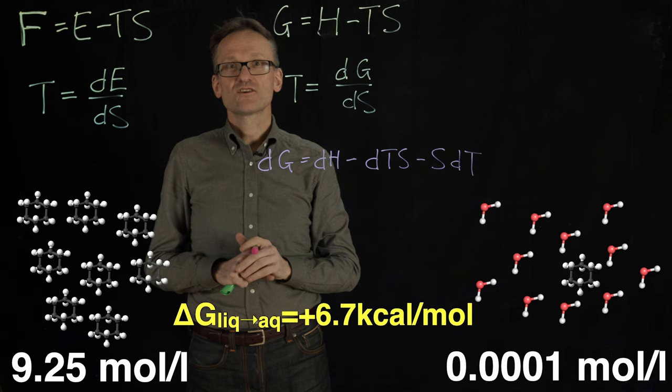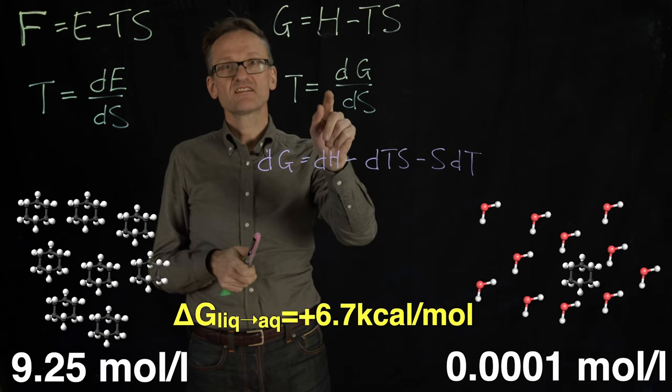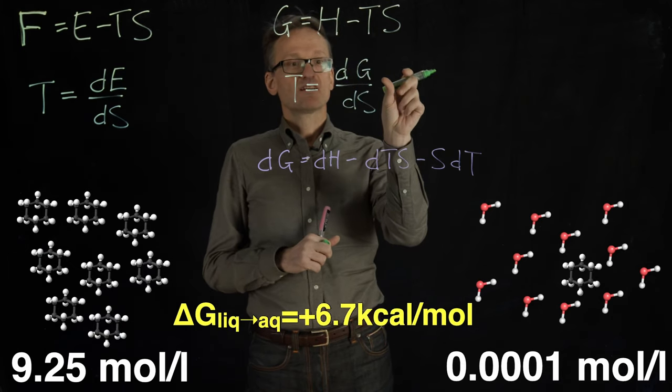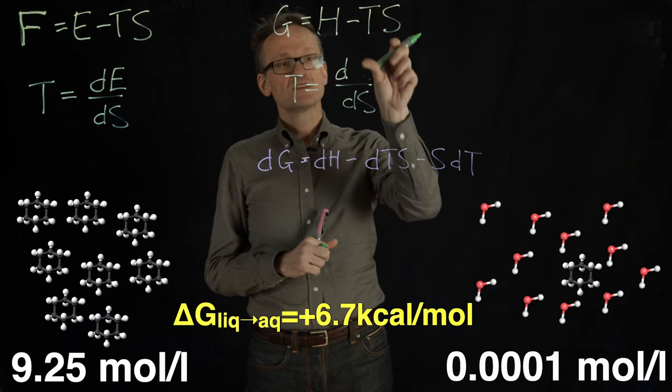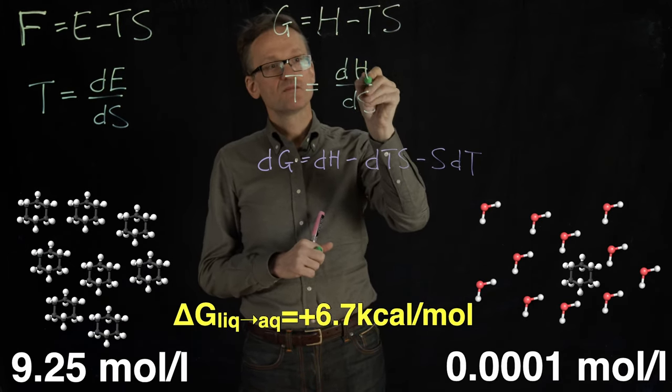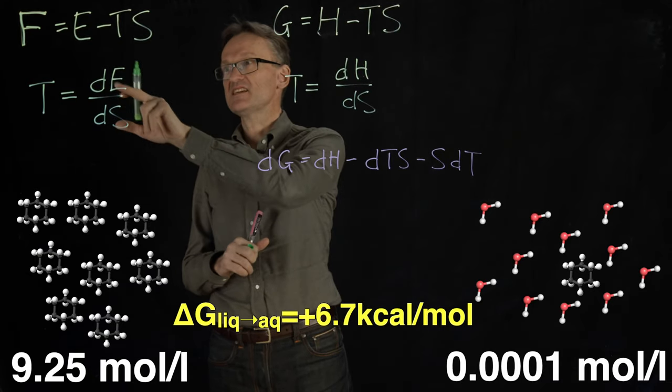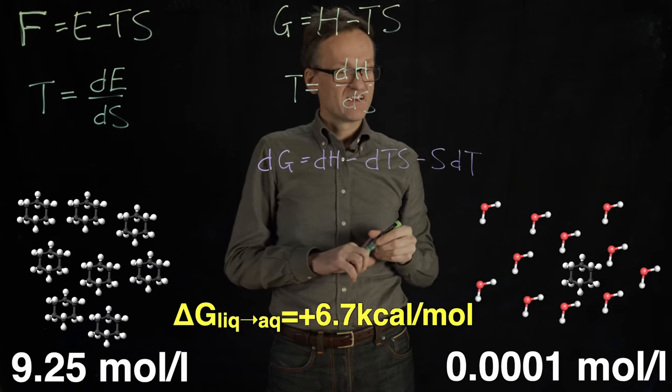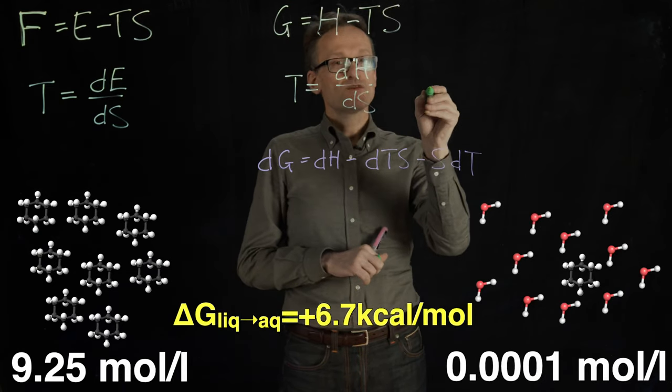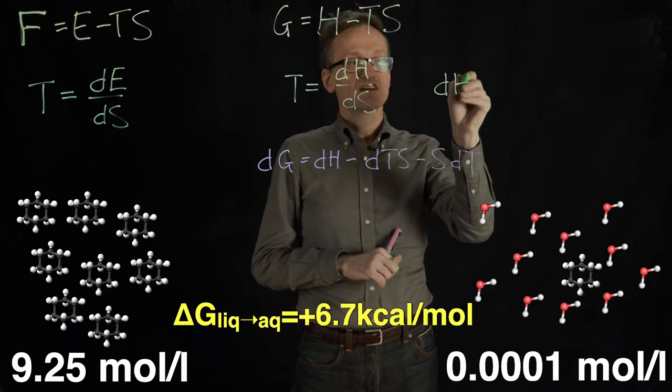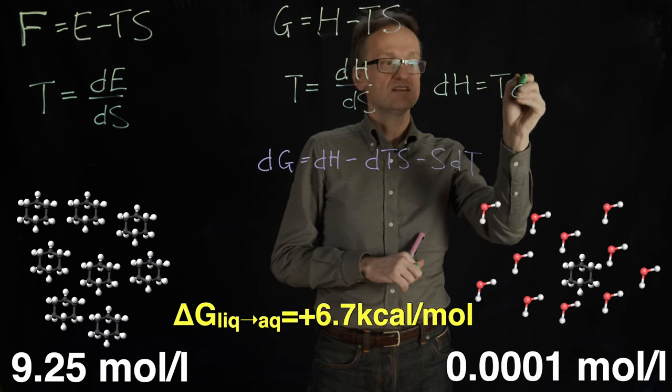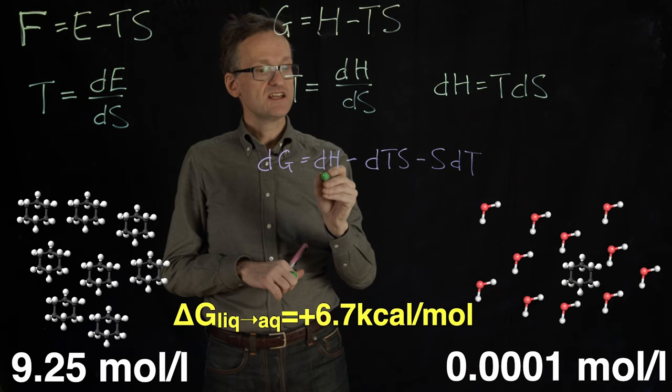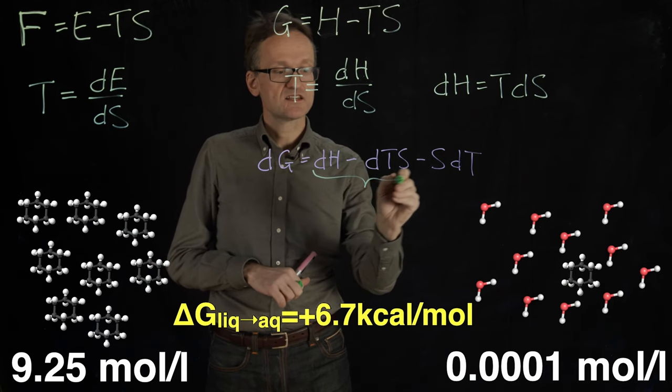And now things start to look very nice because if I take this definition of temperature up here literally—oh sorry, it should be DG there. Bad Eric. This would be H because E there corresponds to H there. Good that I found that before. This number literally says that DH equals T DS, right?